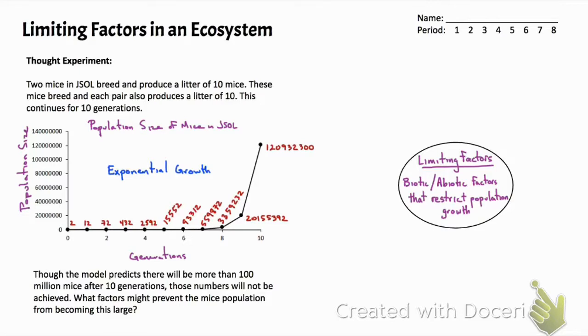Density-independent factors are typically abiotic and are ones that equally disrupt the population regardless of the size of the population.